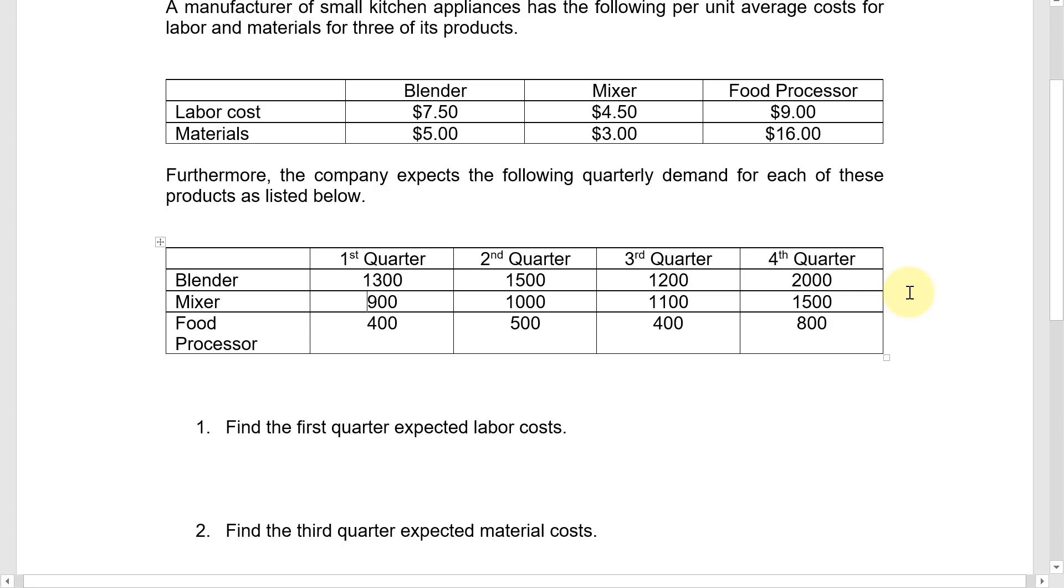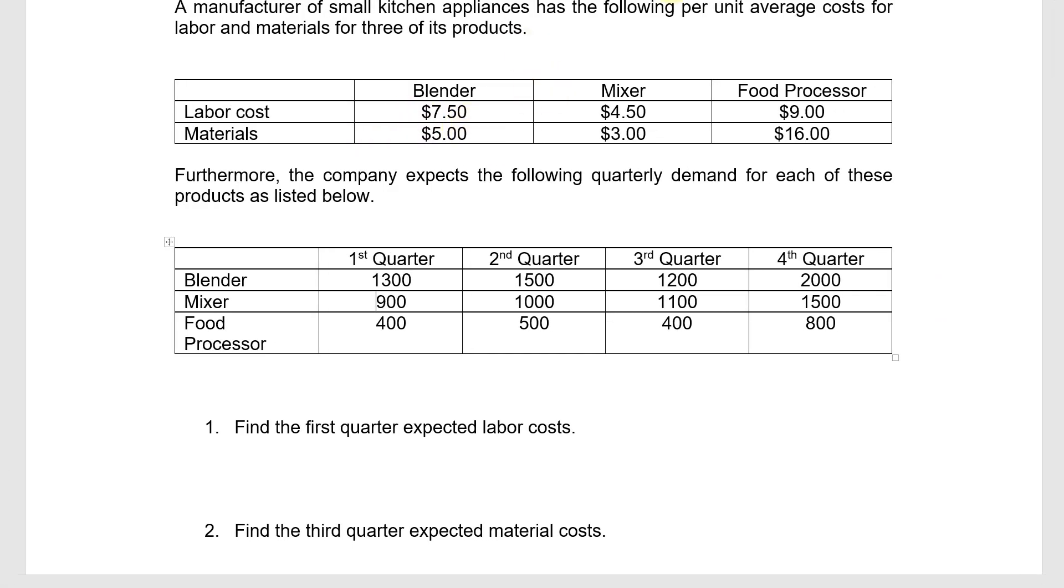Similarly, for example, if I multiplied along the row for the materials, let's say we took this row and multiplied it, let's say times this column, we would be getting costs for materials for all those products in the fourth quarter based on the demands expected in the fourth quarter. So you can see how multiplying these two matrices is exactly what you would want to do to answer these specific questions. So let's just multiply the two matrices together and then we can read off our answers from the product of those two matrices.